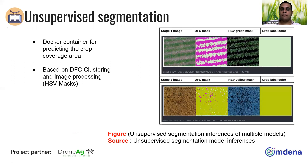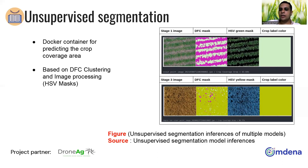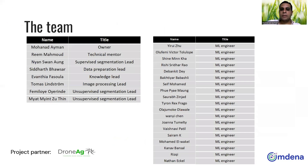We also worked on an unsupervised segmentation approach and delivered a Docker container for predicting the crop coverage area. Here we see an input image from stage one, the first growth stage. The first output is a DFC mask, which is the result of the unsupervised segmentation, followed by a post-processing step using image processing to determine the crop color associated with the crop. Those were the deliverables in brief.